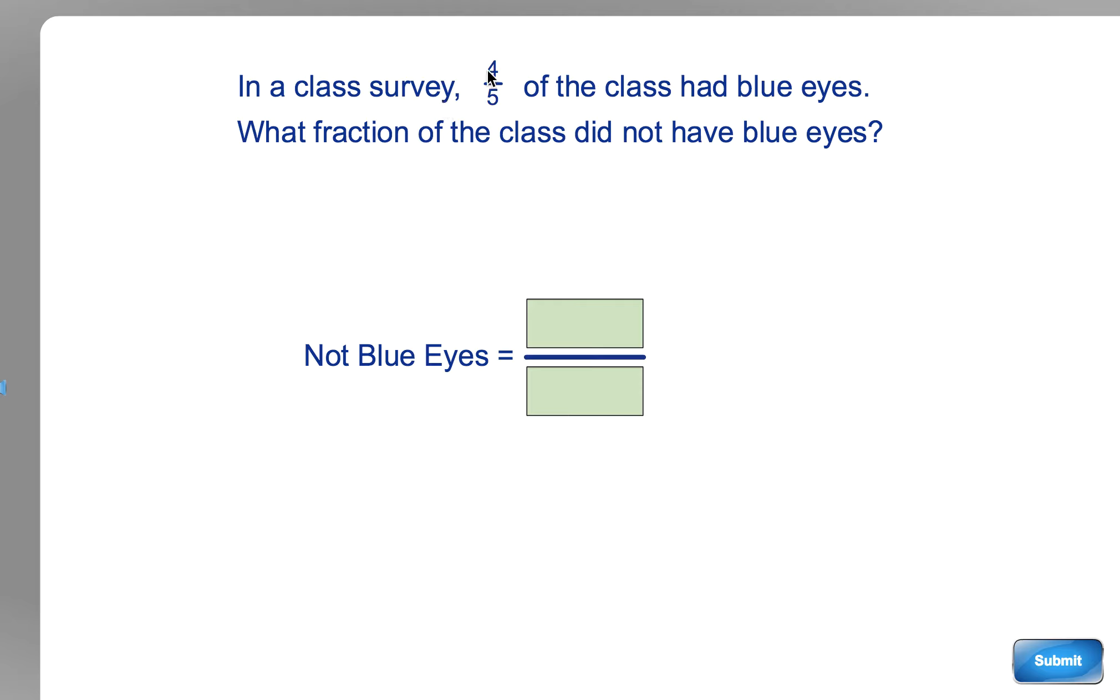In a class survey, four-fifths of the class had blue eyes. What fraction of the class did not have blue eyes? This is just a complementary fractions question. If four-fifths did have blue eyes, then only one-fifth did not have blue eyes. Quite simple.